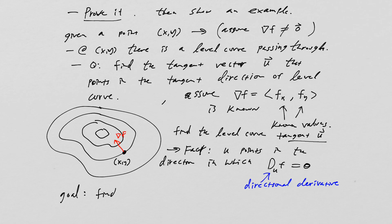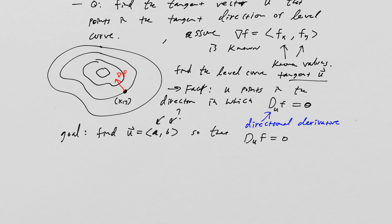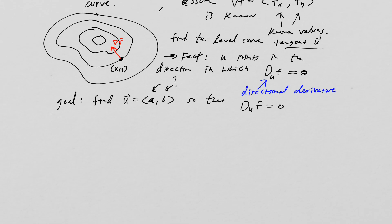So all we have to do now is find u and we'll call u—we'll give it the vector a,b. And these numbers are unknown. We want to determine them. Find these vectors so that d_u of f is equal to zero. So this actually should be fairly straightforward.